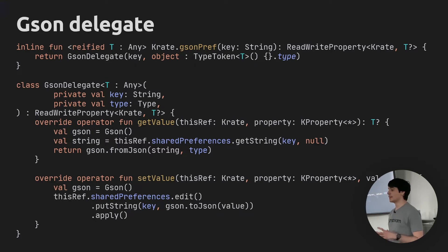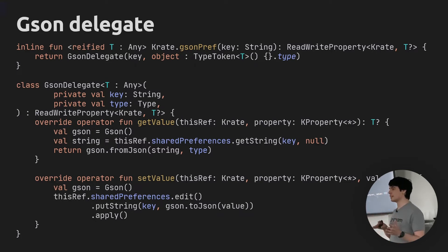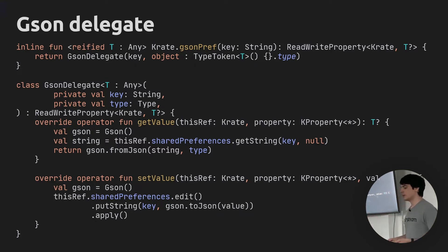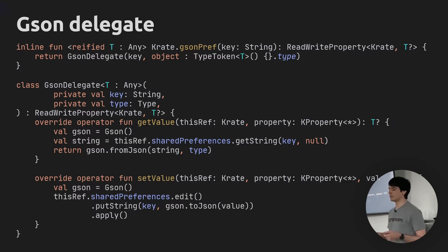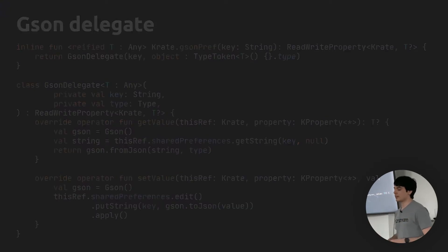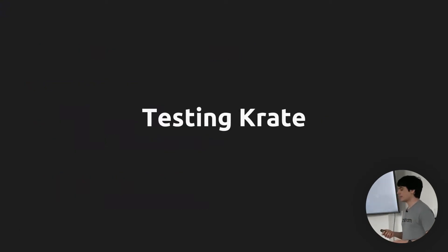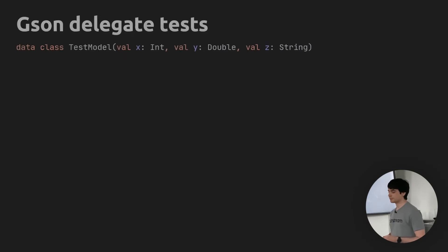This again compiles. And if you try writing and reading values, all of that seems to work now. But after this trouble with intricacies of the type system and type erasure in the JVM, you really want to test your code. So let's see how we can go about testing these delegates.